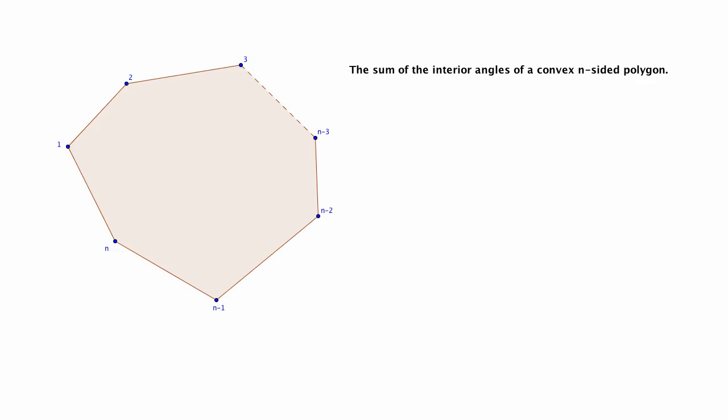So we'd like to find the sum of the interior angles of a convex n-sided polygon, that is a polygon with n sides, where n is some integer that we haven't specified.